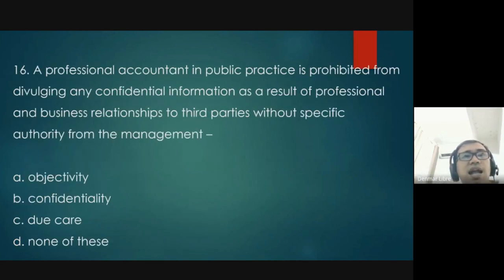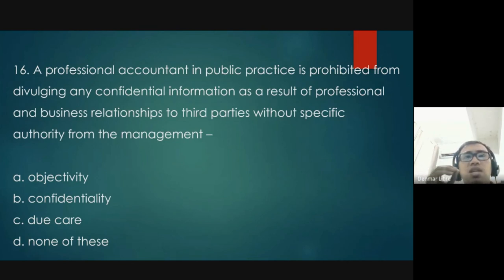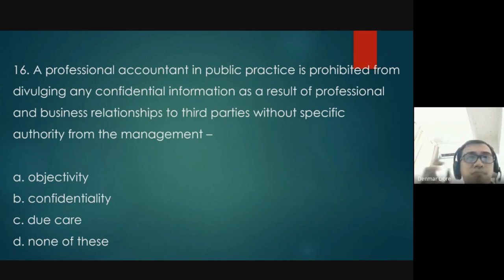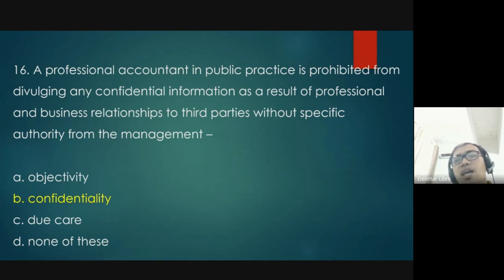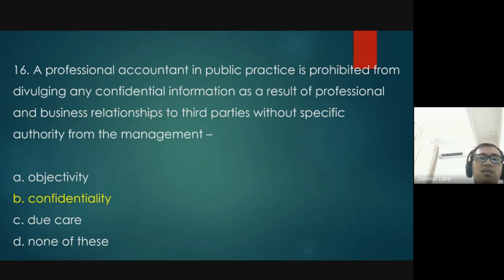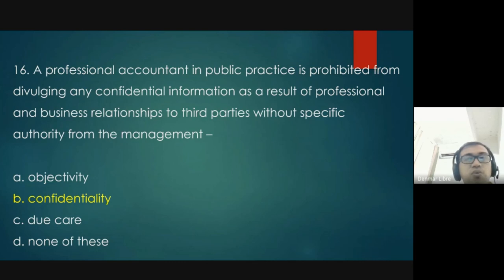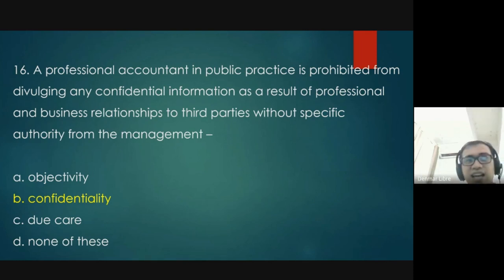Question 16: a professional accountant in public practice is prohibited from divulging any confidential information resulting from professional and business relationships to third parties without specific authority from management. The answer is B — confidentiality. As a public practitioner, information you obtain from auditing private businesses is confidential; you are not allowed to disclose it to their competitors or others without authorization.